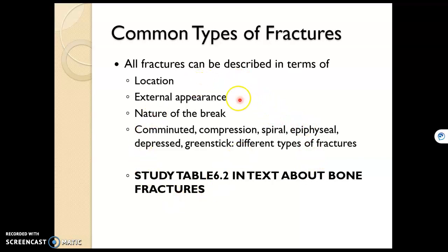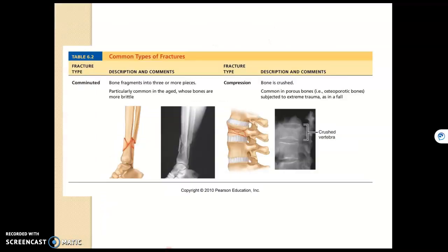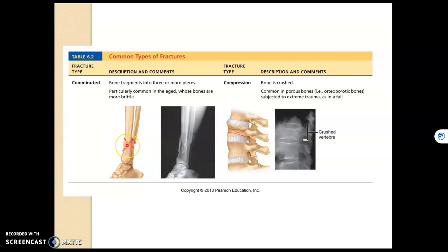We're going to go through these types of fractures with pictures, so you should be able to describe them, or if these fractures are described to you, you should be able to determine which one it is. Starting with a comminuted fracture — that's when there are three or more pieces, fragments, or a shattering of a bone.